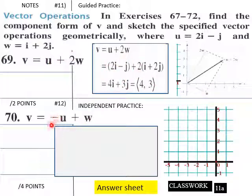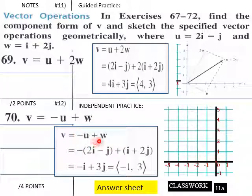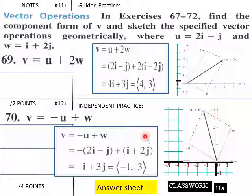Down here, v equals negative u plus w. We plug in negative u plus w, combine like terms, and end up with negative 1, 3. The graph of that ends at the point (negative 1, 3), showing the geometric representation of this vector addition.